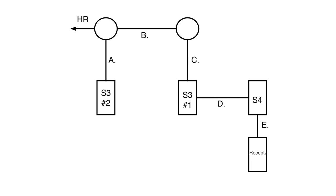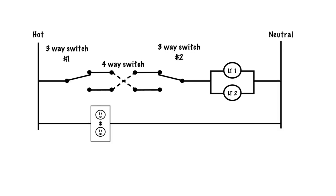Our first step is to draw out a schematic which shows electrically how the circuit works. Here is our schematic. Whenever we have three-way switches we always have two three-way switches — one on one side going from the hot to a common, then through the switch to a traveler. On the other three-way switch, same thing: travelers, common, common to the lights, lights to the neutral.